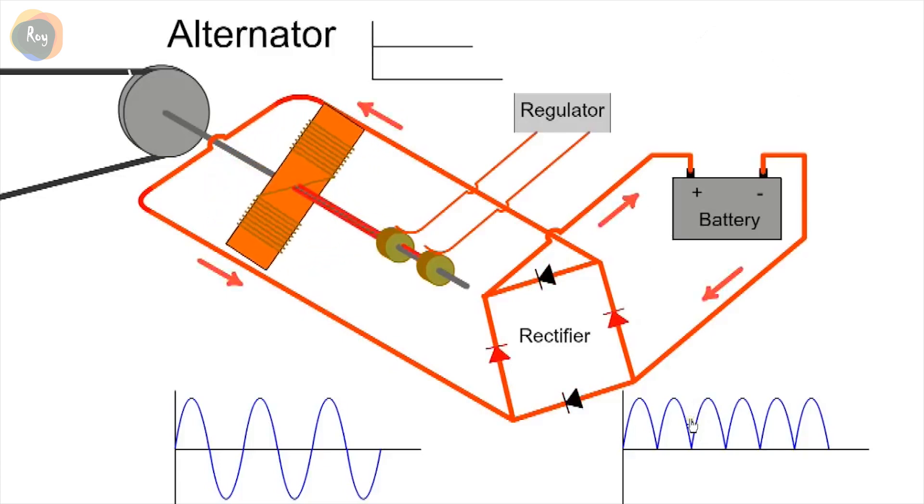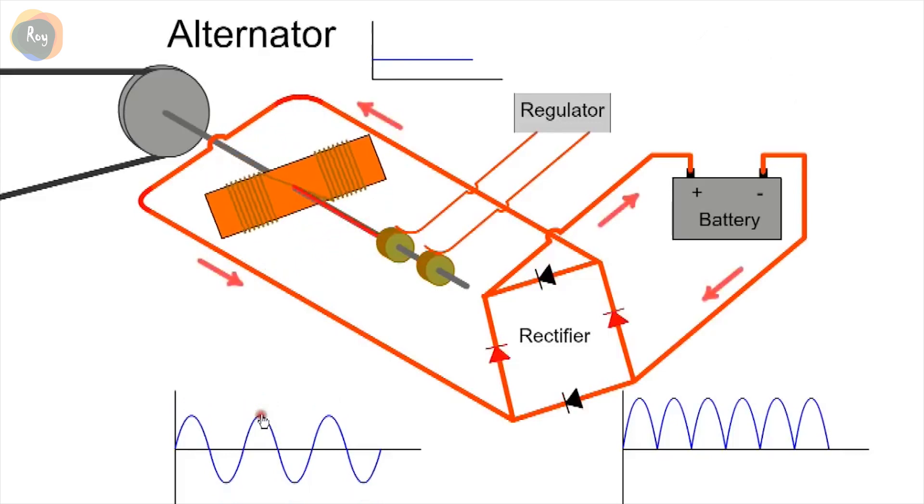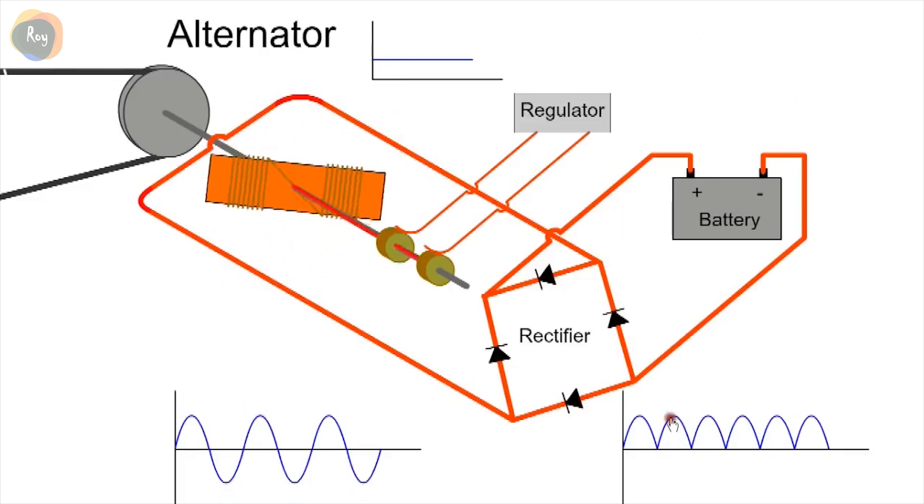If the speed of the alternator increases, so too will the output voltage. To reduce the output voltage, we reduce the excitation current to the rotor. This reduces the alternator voltage and the output voltage from the rectifier.